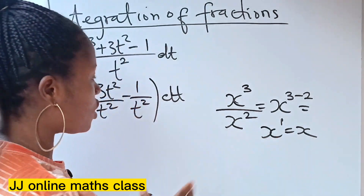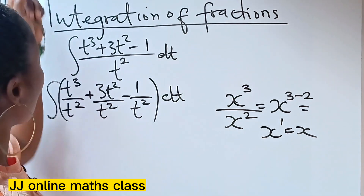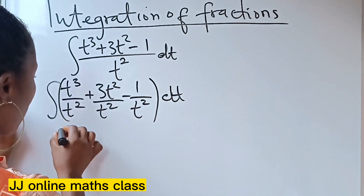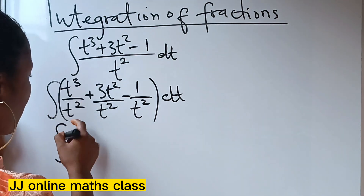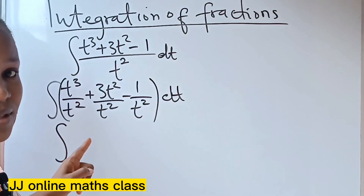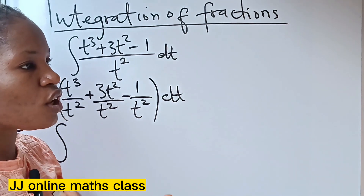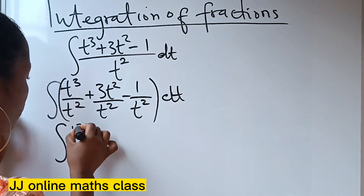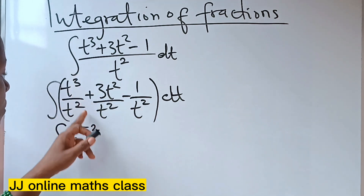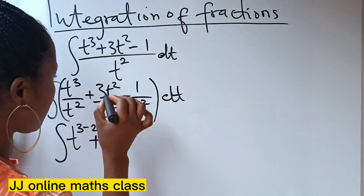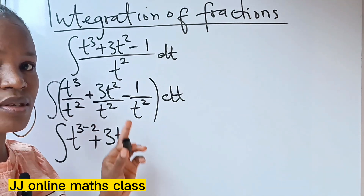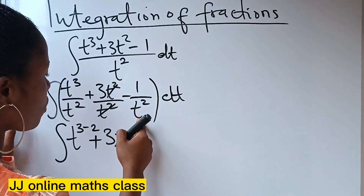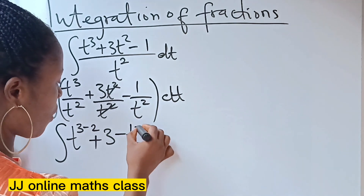So we are going to use this knowledge to work on this particular question. Let us simplify this further. We are going to have the integral of t to the power of 3 over t to the power of 2. Notice that they have the same base and they are dividing each other. According to the law of indices, we pick one base and subtract the powers: 3 minus 2. Plus, we write 3t to the power of 2 minus 2. We can cancel those, so we are left with only 3. Minus — this becomes t to the power of minus 2.